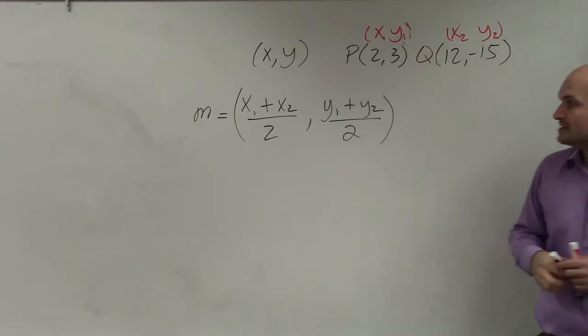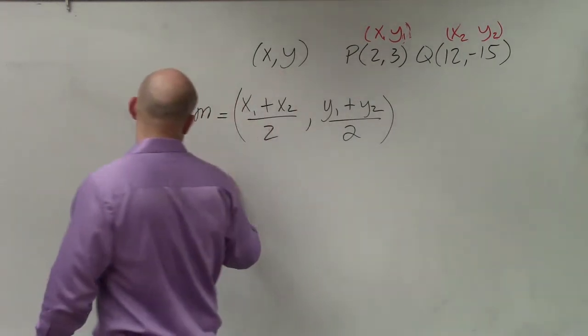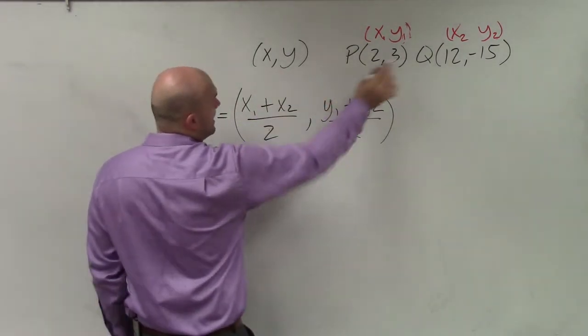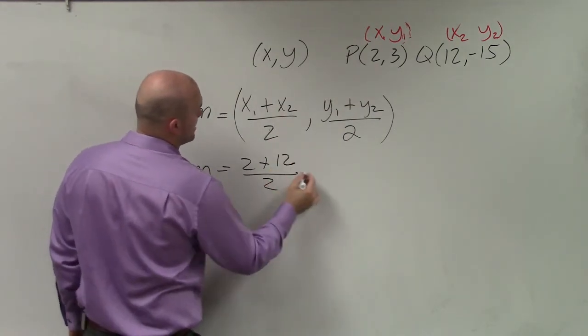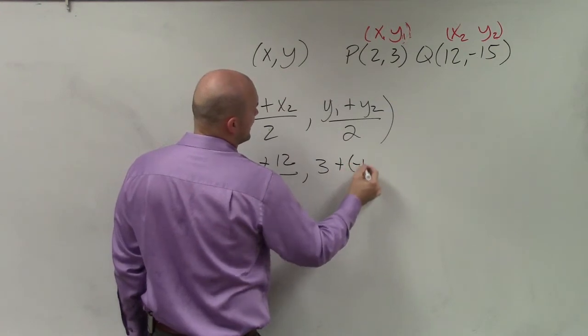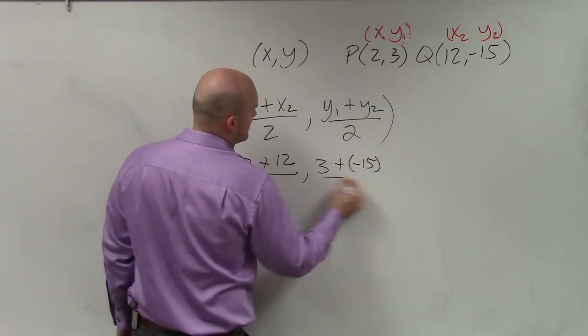So m equals x1, I labeled as 2, plus x2, I labeled as 12, divided by 2, comma, y1 is 3, plus a negative 15 divided by 2.